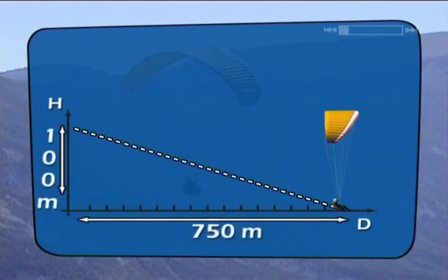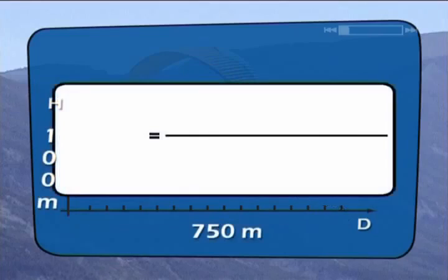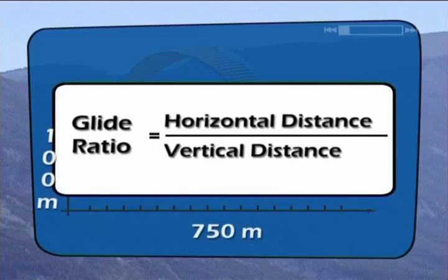750 meters divided by 100 meters gives us a ratio of 7.5. As you may have guessed, the greater the horizontal distance is, the greater this ratio will be, and the longer you'll glide. This is called your lift to drag ratio. It's a technical specification of your wing. The lift to drag ratio doesn't change unless the wing is damaged.